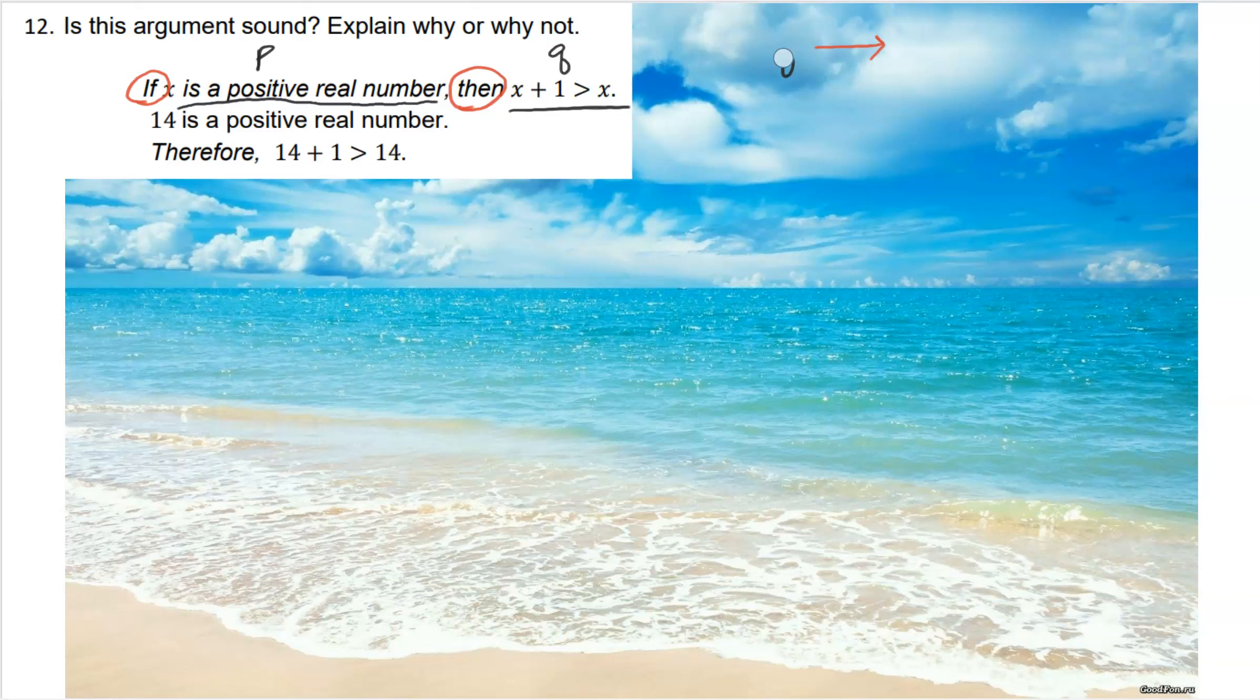Premise number two: '14 is a positive real number.' So being a positive real number is statement P. Here goes my P and my Q. Therefore, 14+1 is greater than 14, and this is Q. It's talking about this particular number, 14, but as far as the idea goes, it's a number plus 1 is greater than the number, right? So that would be Q.